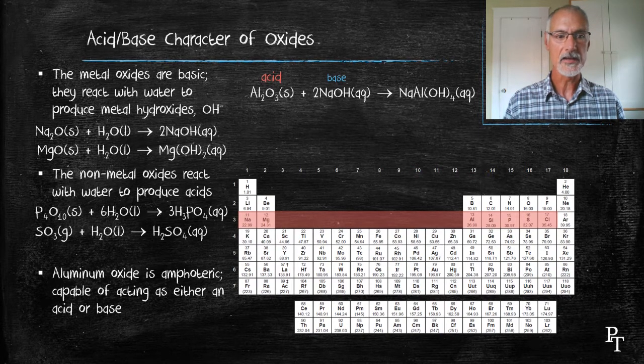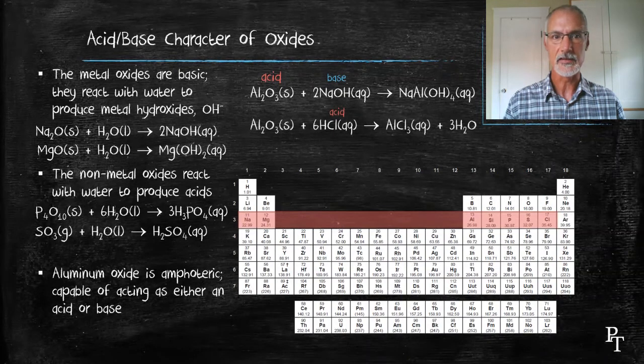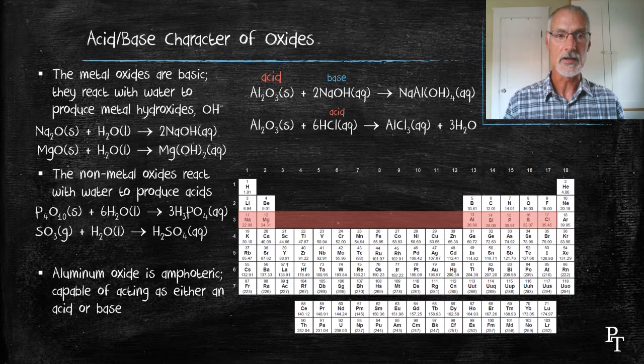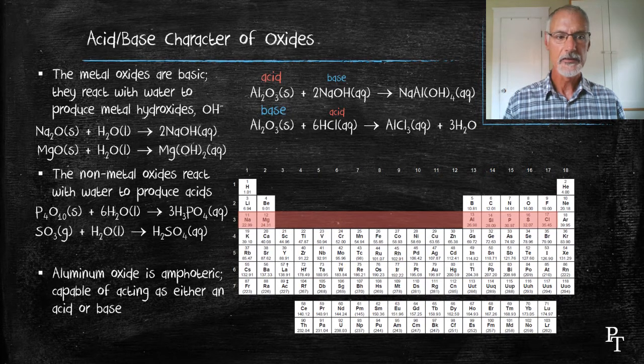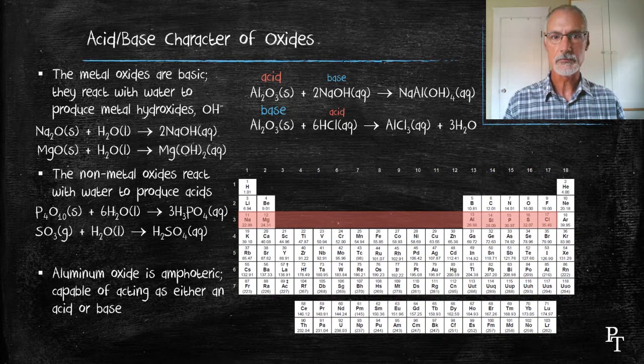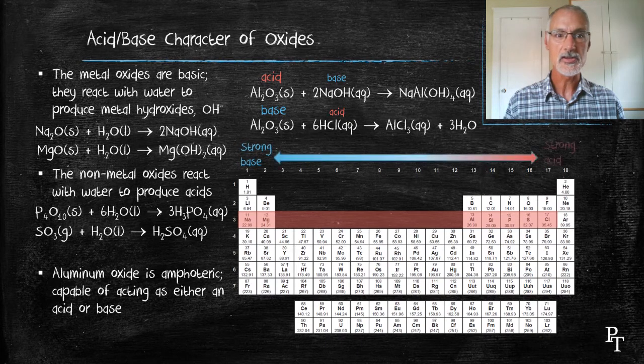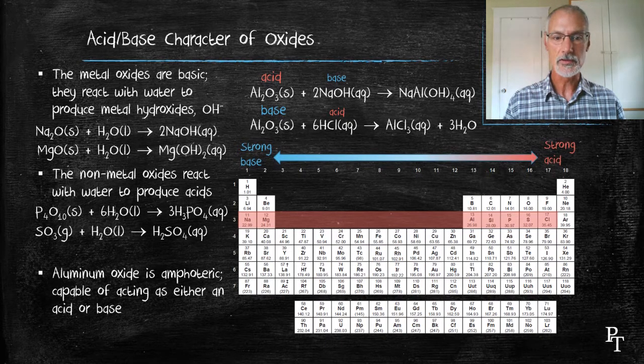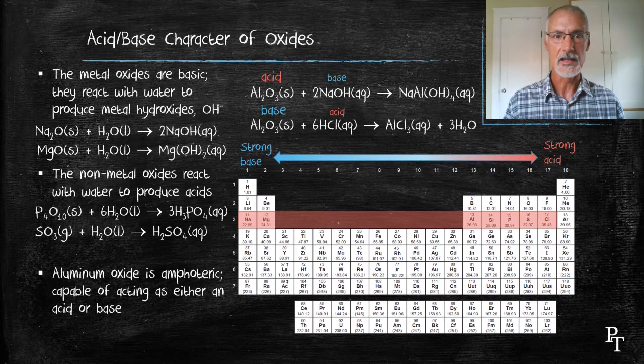In my second example, aluminum oxide is being mixed with hydrochloric acid. So, in this situation, the aluminum oxide is acting as a basic compound. So, we can see, as we move from left to right across the period, we move from a very strong base to a neutral compound, or amphoteric compound, at aluminum oxide, and then to increasing acid strength, all the way over to the chlorine oxides.